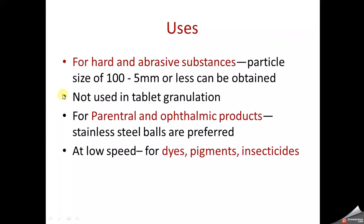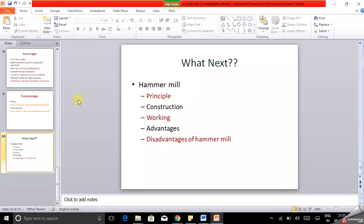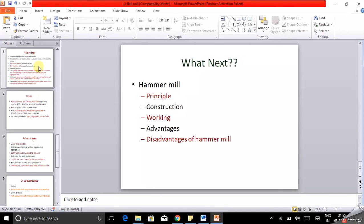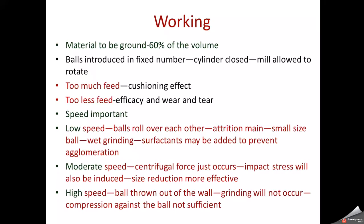Another important factor is speed. At very low speed, balls roll over each other so attrition is mainly achieved; smaller balls are used and this is generally used for wet grinding. Surfactants must be added in wet grinding to prevent agglomeration.